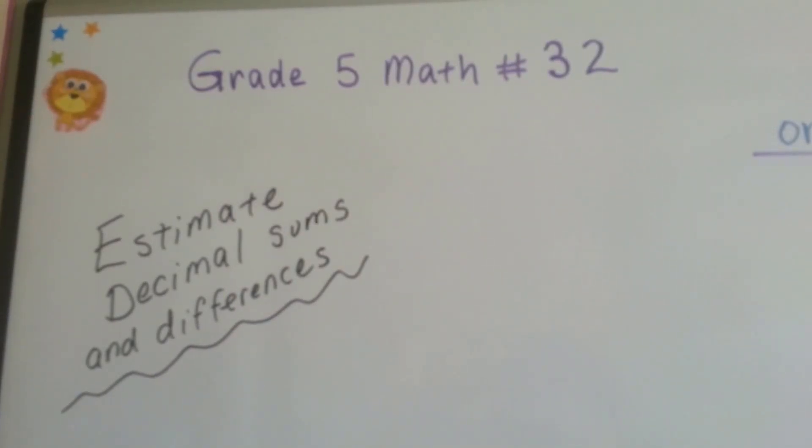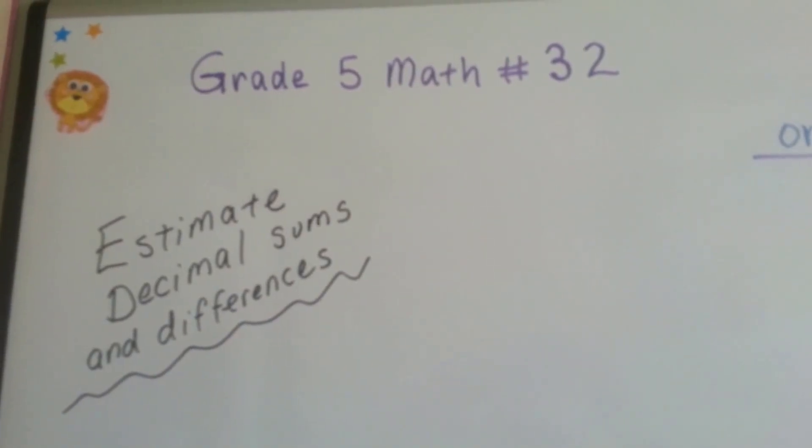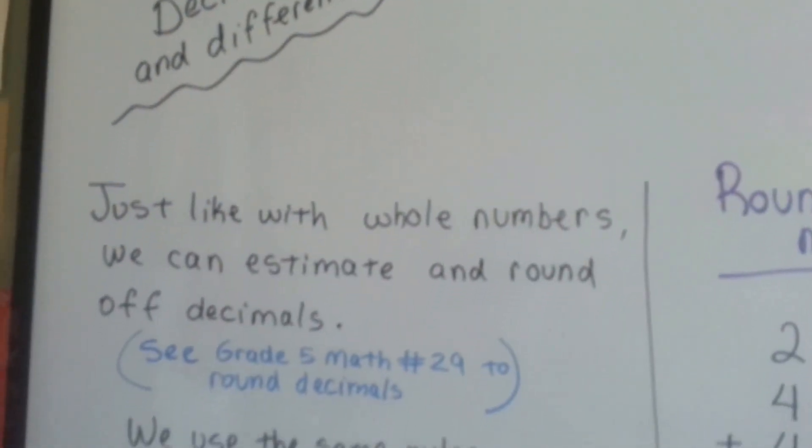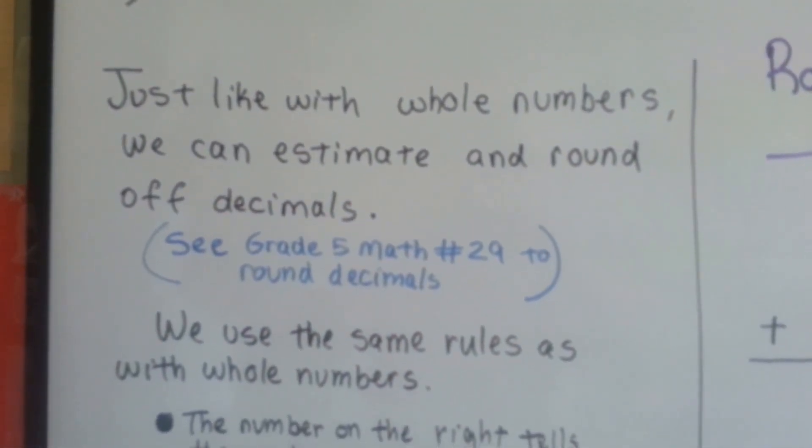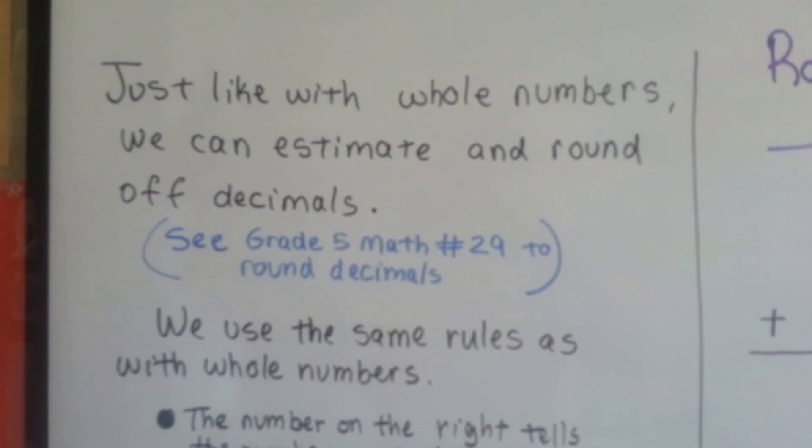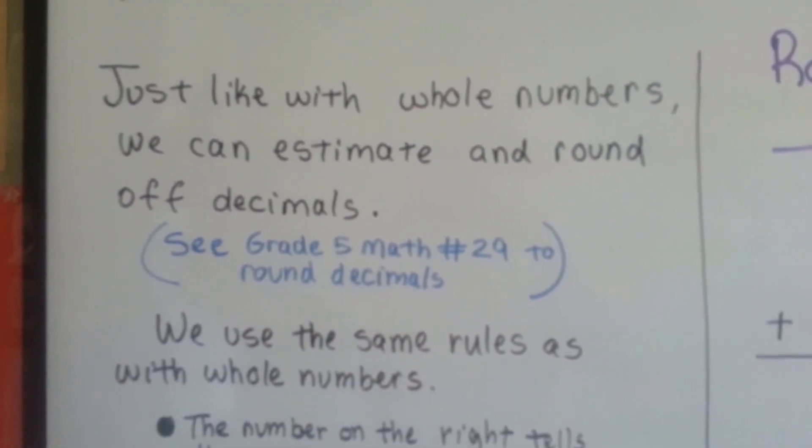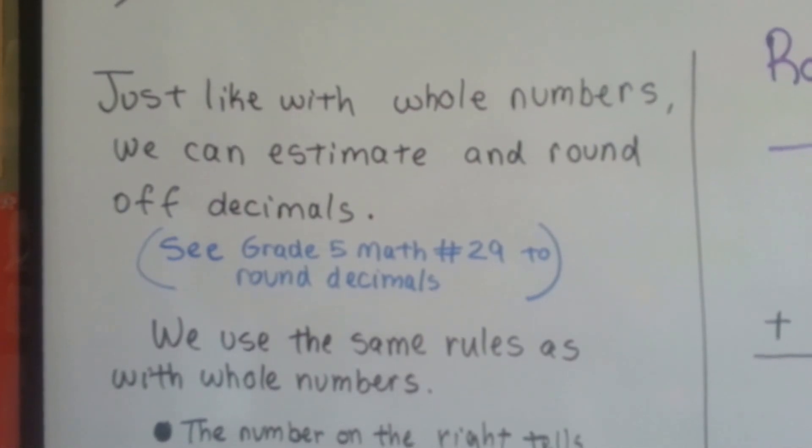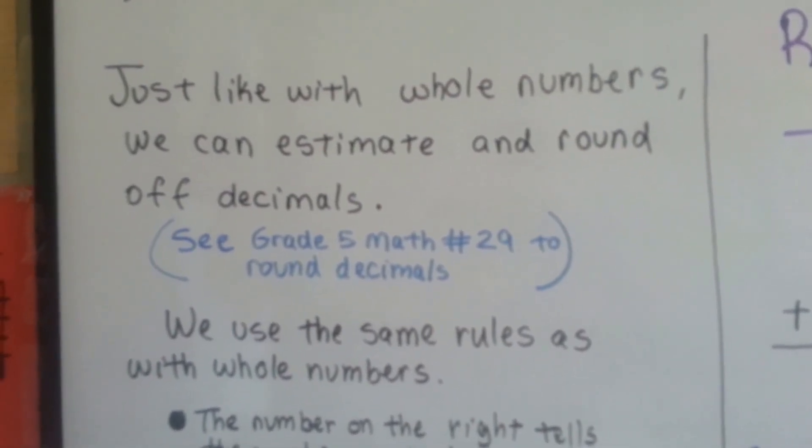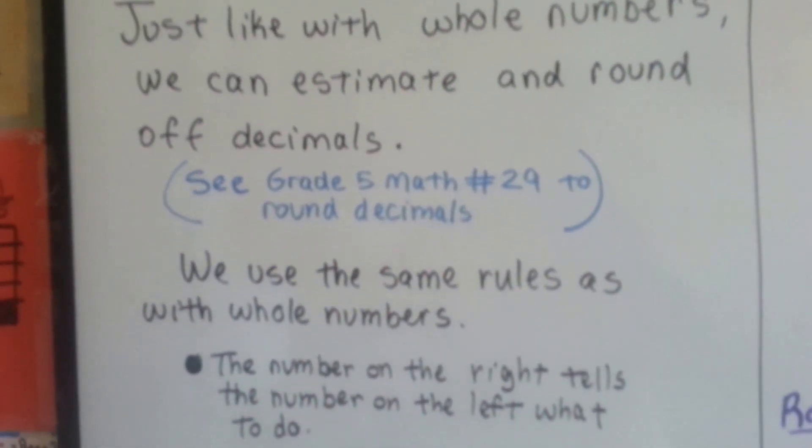Grade 5 math number 32. Estimate decimal sums and differences. Just like with whole numbers, we can estimate and round off decimals. If you want to see a complete video on rounding decimals, you can go to grade 5 math number 29. We're on number 32 right now. But you can follow along with this and you might be fine.